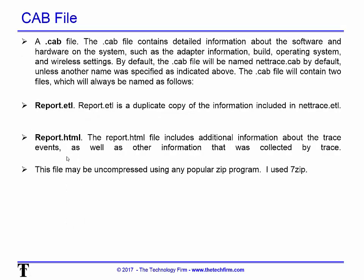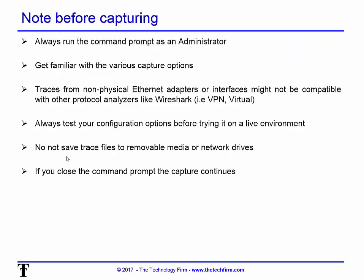When your capture is done you end up with a capture file with an ETL extension and a CAB file (.cab), which is just a compressed file. You can open it with any zip tool — I use 7-Zip, WinZip, or any zip-type tool, even Microsoft's extract command. There's a whole collection of files in there, and in the root folder you'll see something called report.html, which gives you a bunch of information about the capture that you might want to reference.